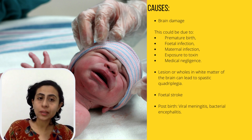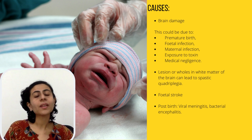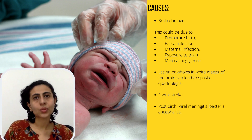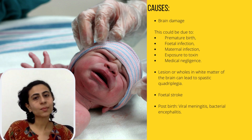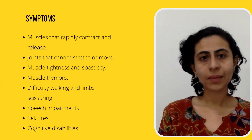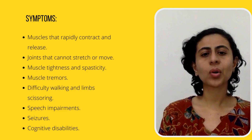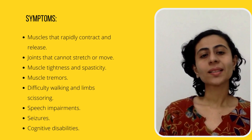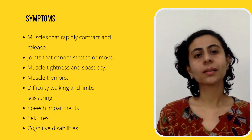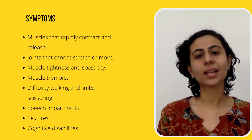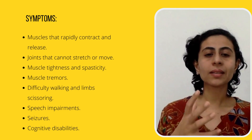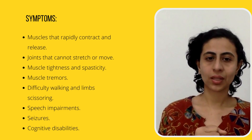If the child has a fetal stroke, or after birth there is a viral or bacterial infection in the brain, then there is a cystic CP. If we talk about symptoms, the muscles of these patients are very tight, and this is why problems like spastic diplegia or quadriplegia arise, because the muscles are under a lot of tension.